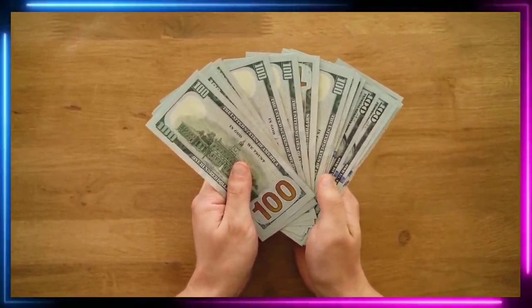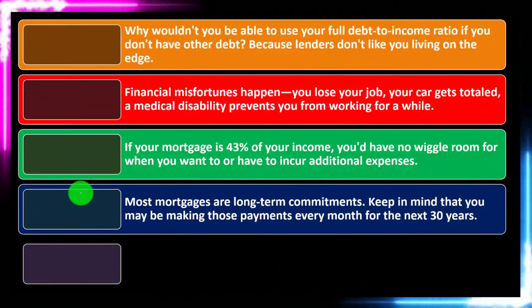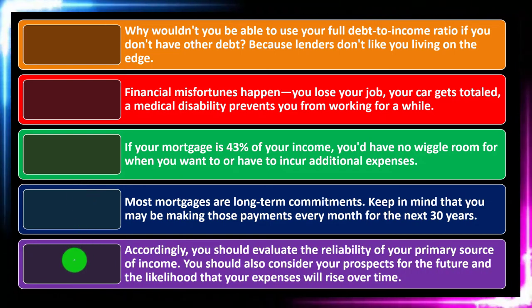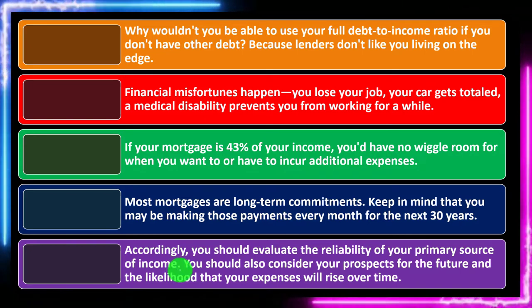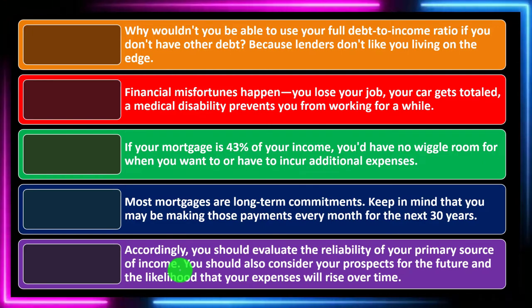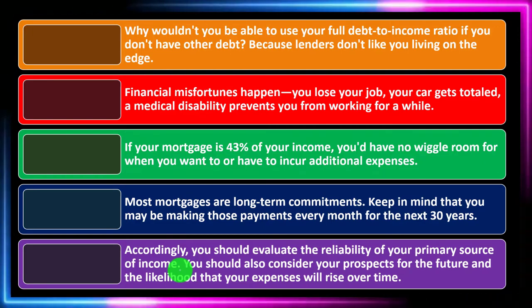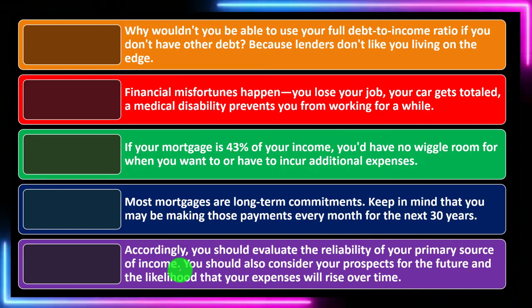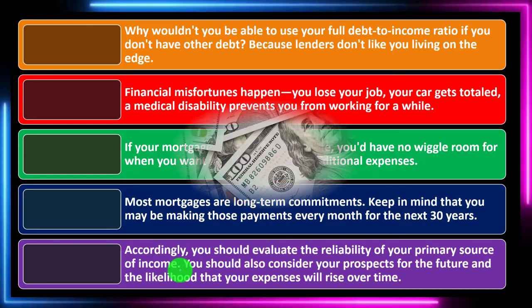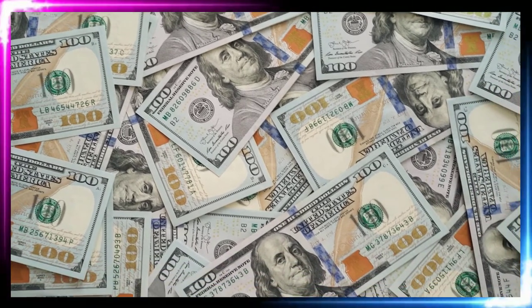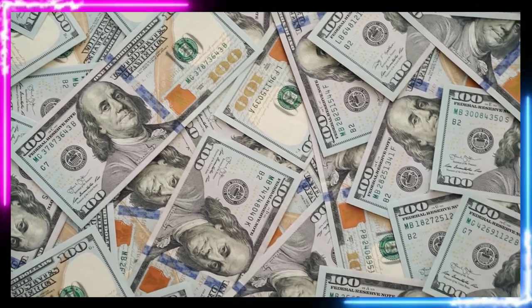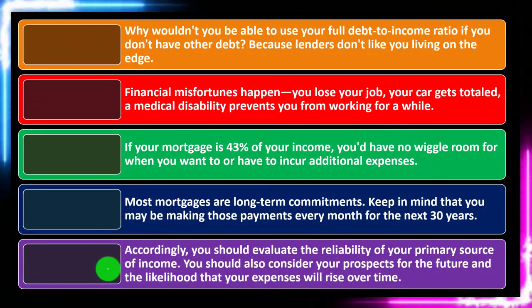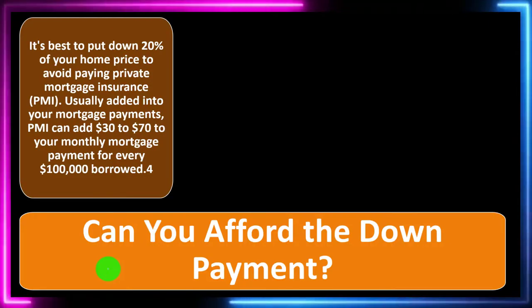You want enough cushion so that if there's a problem, you're not just barely making payments. It's likely that something will happen within 30 years. Hopefully your income goes up and the house value increases, but you want some cushion. Accordingly, you should evaluate the reliability of your primary income source. Lenders are often more cautious with business income like a sole proprietorship than with a stable W-2 income at a job you've held for years. You should also consider your prospects for the future and the likelihood that your expenses will rise over time.